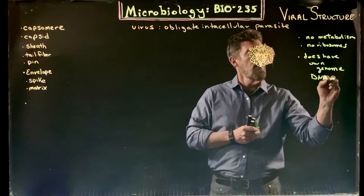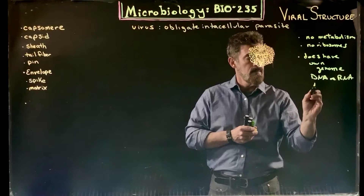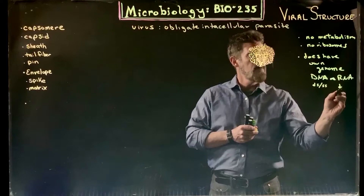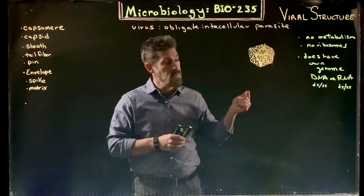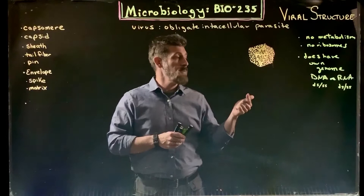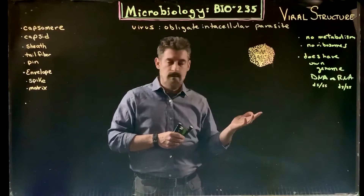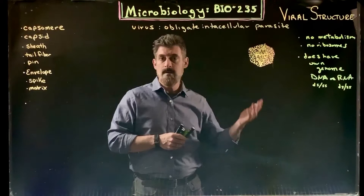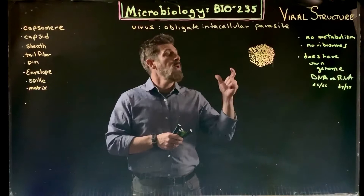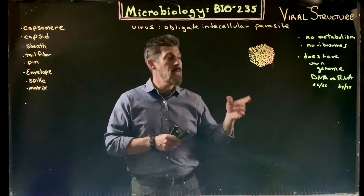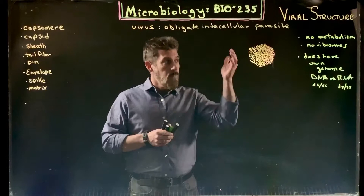That genome is either DNA or RNA, and it could be double-stranded or single-stranded. DNA is usually defined as a double-stranded molecule and RNA as a single-stranded structure, but in a viral genome we find that some are double-stranded DNA as expected, some are single-stranded DNA, some are single-stranded RNA, and some are double-stranded RNA. Single-stranded RNAs can also have what we call plus and minus sense — one reads the same as messenger RNA and the other is the complementary sequence.